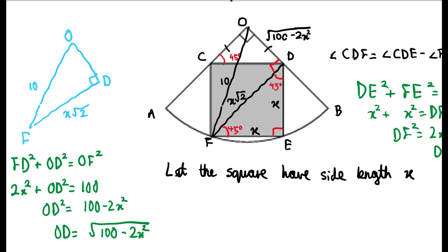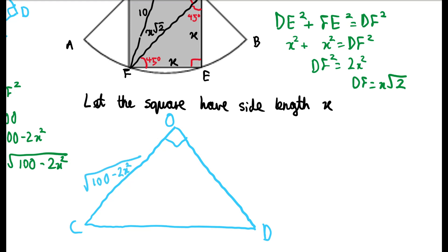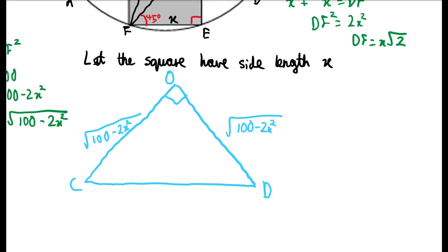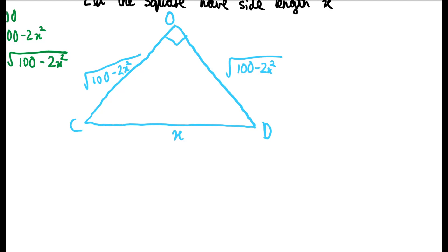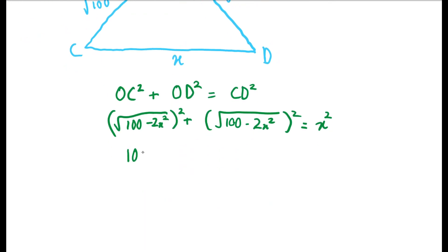We also figured out that line OC has the same length as OD, so OC is also root 100 minus 2x squared. Now if we look at triangle OCD, both OC and OD have length root 100 minus 2x squared, and CD is a side of the square with length x. Using Pythagoras' theorem on this right-angle triangle, OC squared plus OD squared equals CD squared. Expanding the left-hand side, we get 100 minus 2x squared plus 100 minus 2x squared equals x squared.